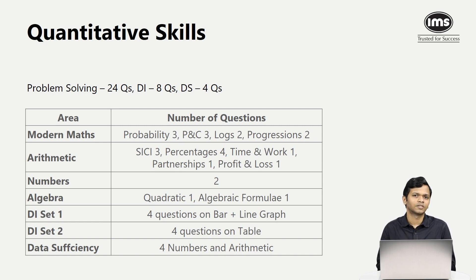Overall, when we look at the quant section, the scaling is generally severe. It means that people tend to score on the lower side. And because the test has become slightly difficult, the quant section has become slightly difficult, there could be some impact on the sectional cutoff. But we'll talk about that towards the end of the video.